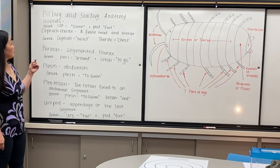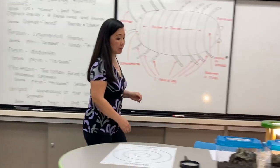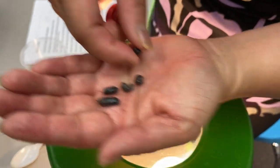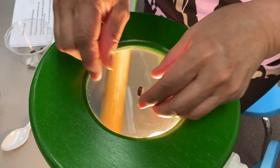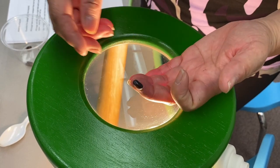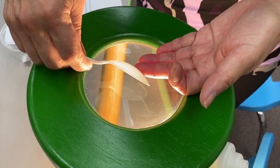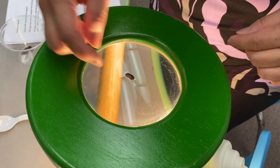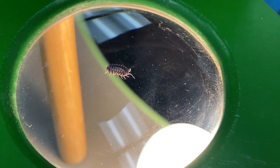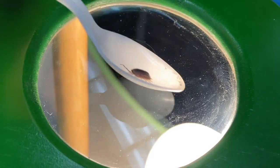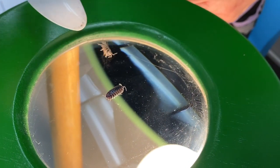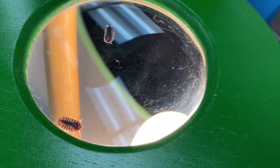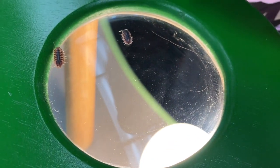That's it for the pill bug anatomy — now let's take a look at them up close. These guys roll up into a little ball. You can see that his carapace, the outer shell, is much more rounded than the sow bug. The sow bug is much flatter, and sow bugs do not roll up into little balls, but the pill bugs can.